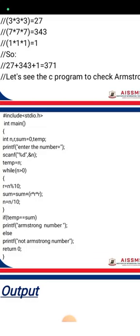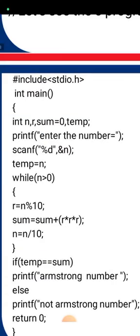We initialize integer variables: n for the number to be entered, r for the remainder, sum equal to 0 for storing the sum of cubes, and temp as a temporary variable to store the original value. Then printf prompts the user to enter a number, and scanf reads it using %d into variable n.